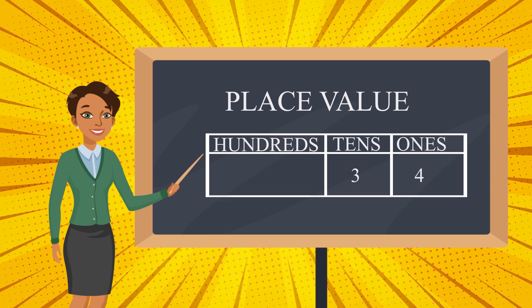The place value of 4 will be equal to 4 into 1 is equal to 4. Whereas, the place value of 3 will be, where the 3 is sitting, it's sitting in 10's place. How many 10's we can find here? 3 10's. So, 3 into 10 is equal to 30. Now, the place value of 3 will be 30. Whereas, the place value of 4 will be 4.